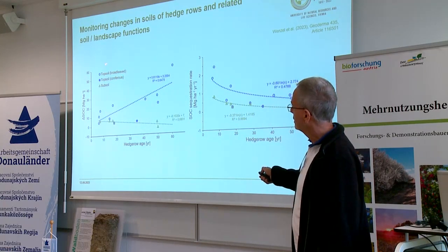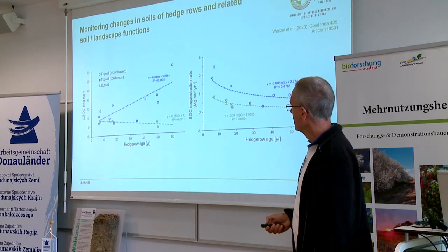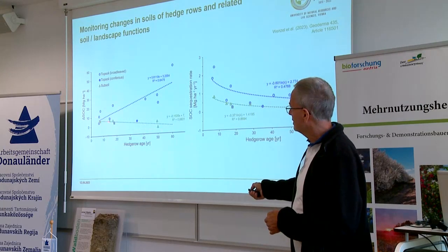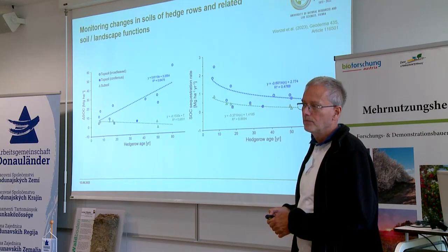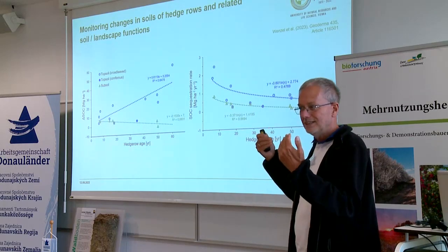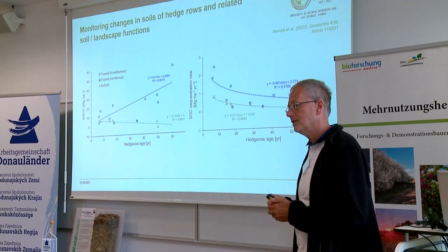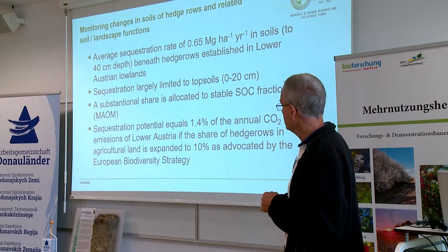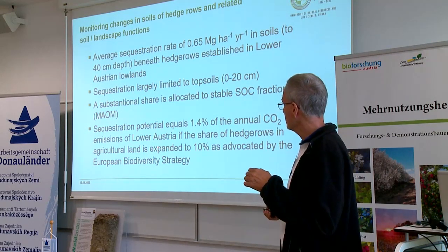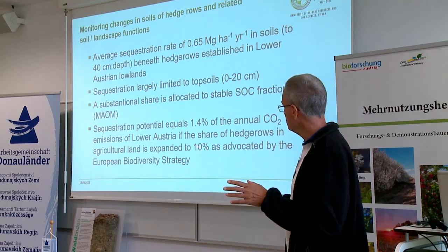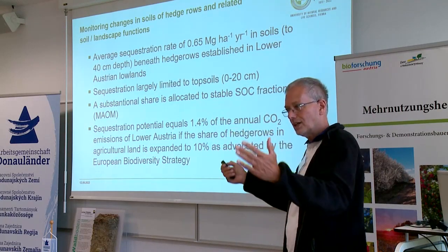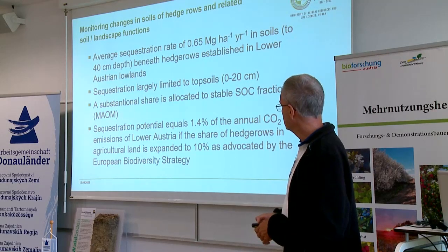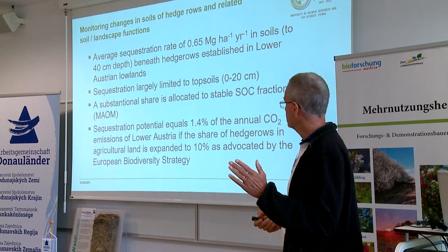We combined our data with other European studies and can see a very similar increase over time, even data from Spain, though limited to broad-leaved hedges basically. Those studies that are available show that overall there is not much change in the subsoil. The sequestration potential of hedgerows — if we would expand from the current 3,000 hectares or so to the 10% proposed by the European Biodiversity Strategy in agricultural landscapes — that would be a sequestration potential annually equaling 1.4% of the annual CO2 emissions. So that's not nothing.